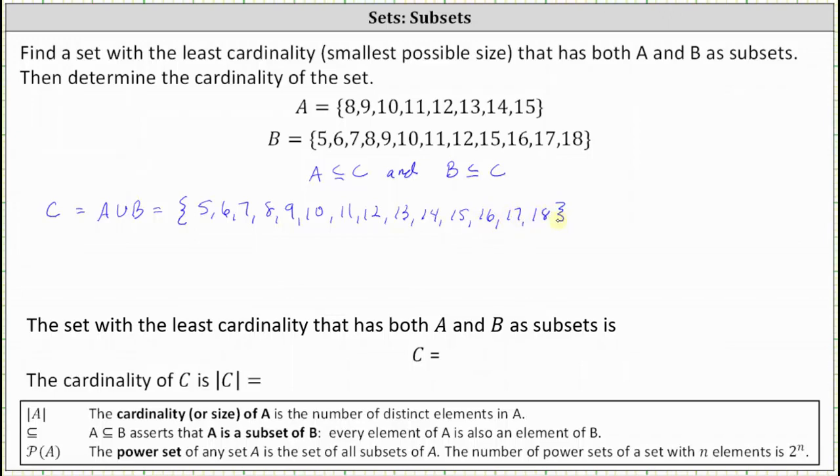Notice every element in A is in C and every element of B is also in C. That would still be true if we added extra elements to set C, but then set C would not have the least possible cardinality. So the set with the least cardinality that has both A and B as subsets is set C,